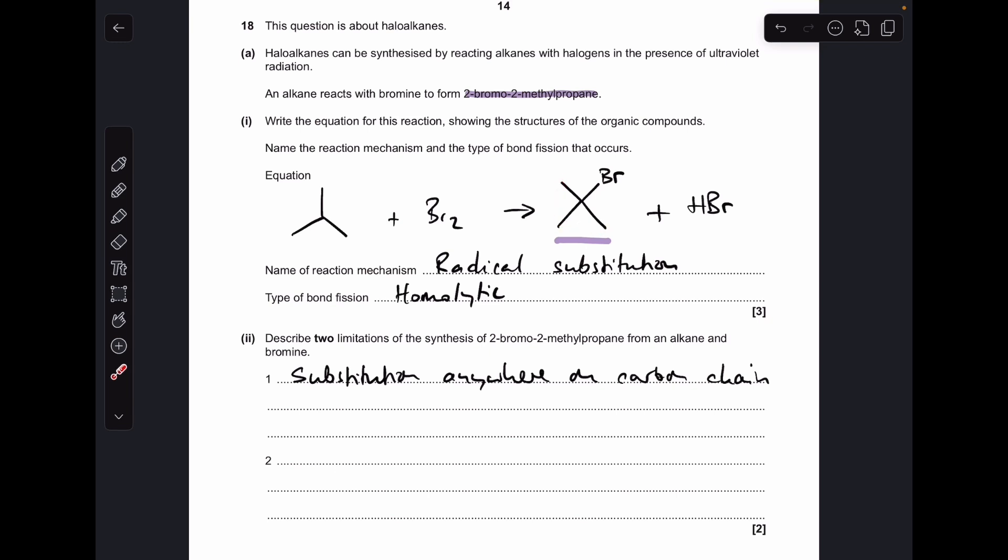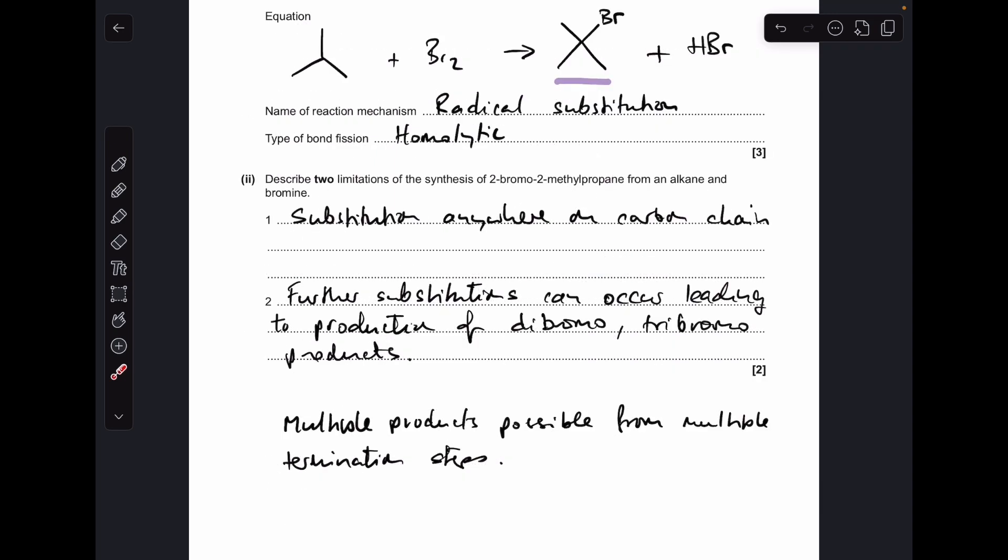You could mention that further substitutions can occur, which would lead to the production of a dibromo or tribromo product. The other reason you can give is that multiple products are possible from those multiple termination steps at the end of the mechanism.